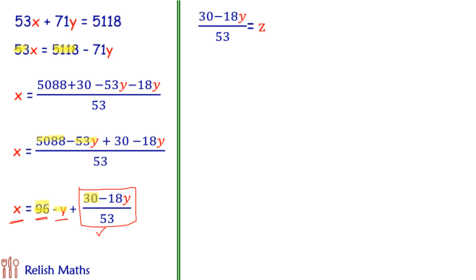So here z is an integer. So we have x integer, y is integer, and z is integer. And x and y are actually natural numbers. So let's solve it. Take 53 on the other side. So 30 minus 18y is 53z. And let's take y, value of y which is 30 minus 53z upon 18.